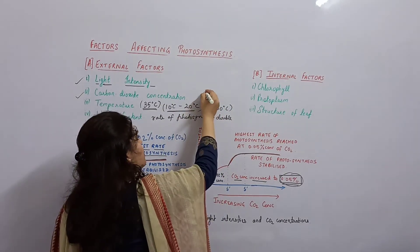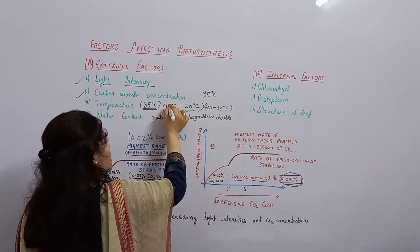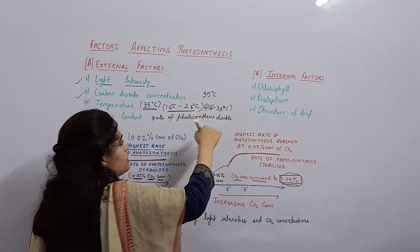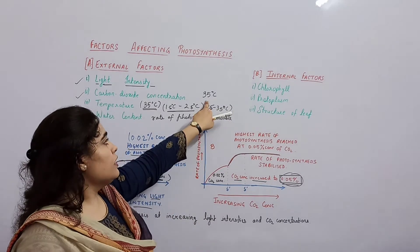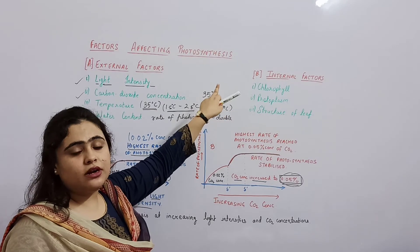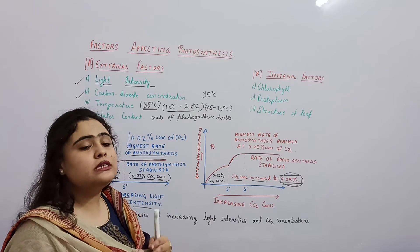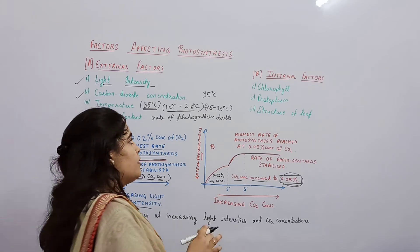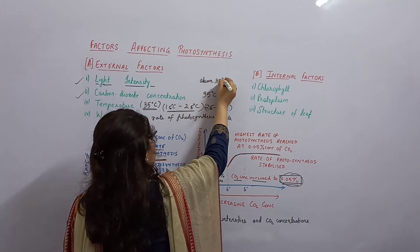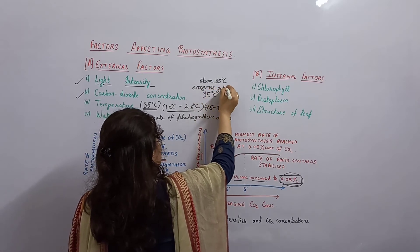But when it comes to 35 degrees centigrade, 15 to 25 and 25 to 35, in this 10 degree rise in temperature the rate of photosynthesis doubles. But when it comes to 35 degrees centigrade, beyond 35 degrees centigrade, what happens? Enzymes are destroyed. That's why rate of photosynthesis becomes very very less. Above 35 degrees centigrade, enzymes get destroyed.